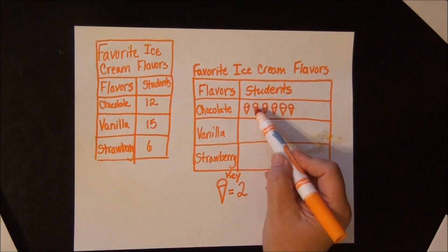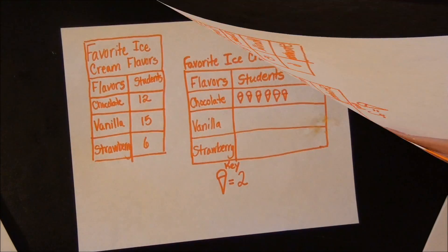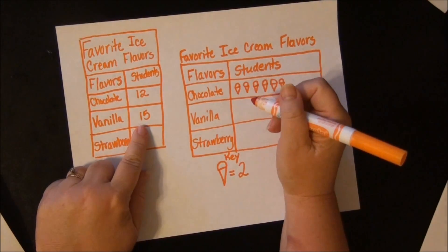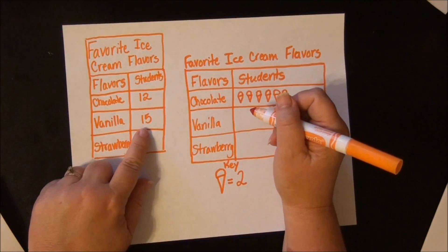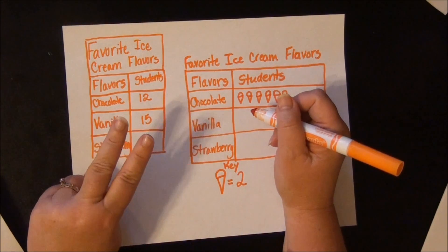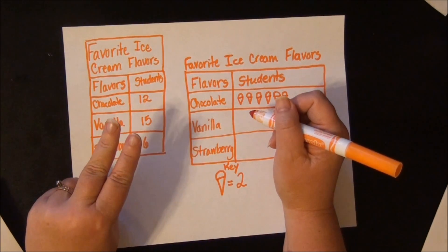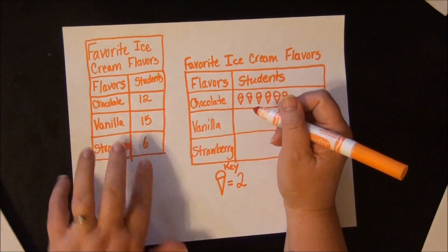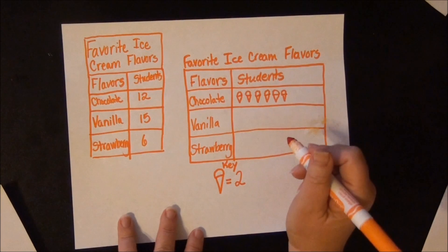Now for vanilla, I'm going to make cones, but here's the problem: 15 is not an even number. So if I count 2, 4, 6, 8, 10, 12, 14 — the next one is 16. It's halfway in between, but let me show you what we do when we do that.